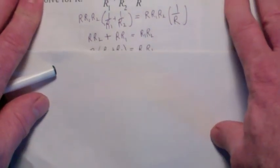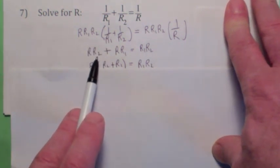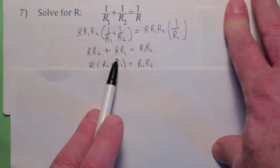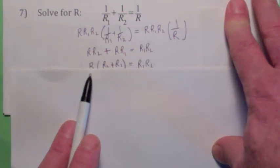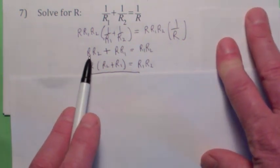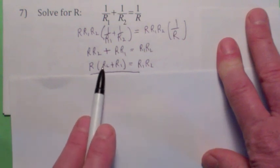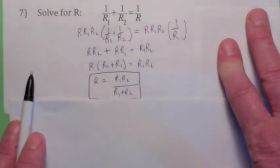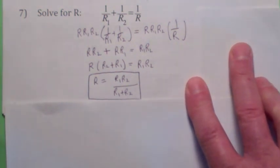You should get on the left side, the r1 cancels, you have r, r2. Here the r2 cancel, you have plus r, r1. On the right side, the rs cancel, you have r1, r2. Since we're trying to solve for r, what you could then do is factor the r out of these two terms. And the last step is to divide both sides by r1 plus r2. So there you go. R equals r1, r2 divided by r1 plus r2.